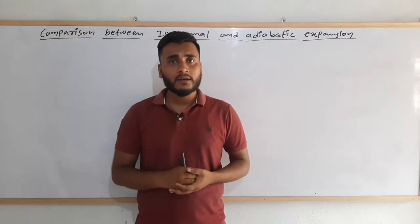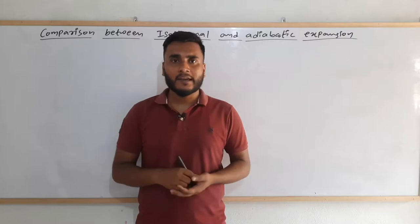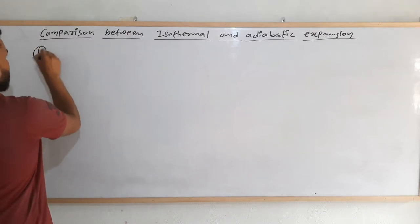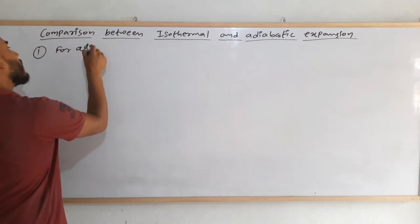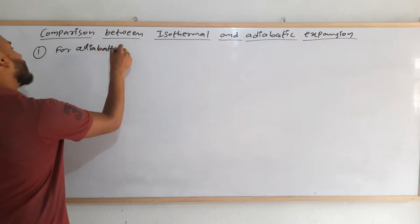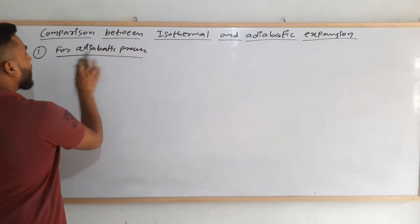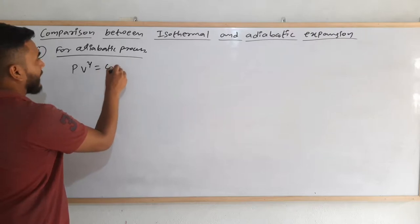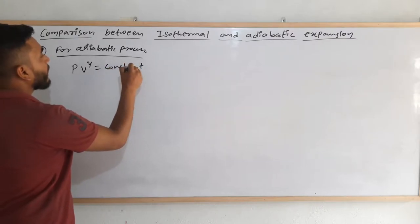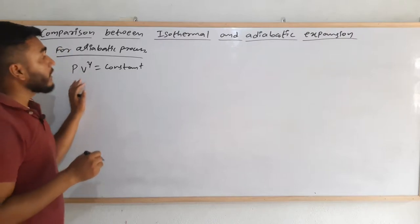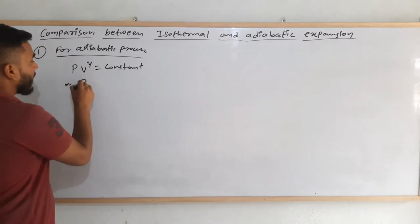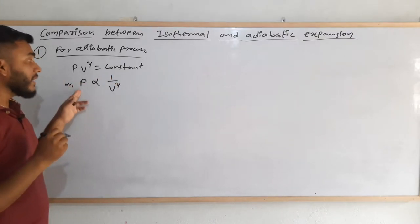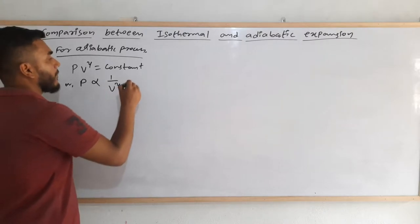We are going to do the comparison of isothermal and adiabatic expansion by graphical method. Before that, we need to know two things. For an adiabatic process, we can draw a conclusion that pV-gamma is a constant — the product of p and v to the power gamma is constant. This can be written as p is inversely proportional to v to the power gamma. Let's consider this equation number one.